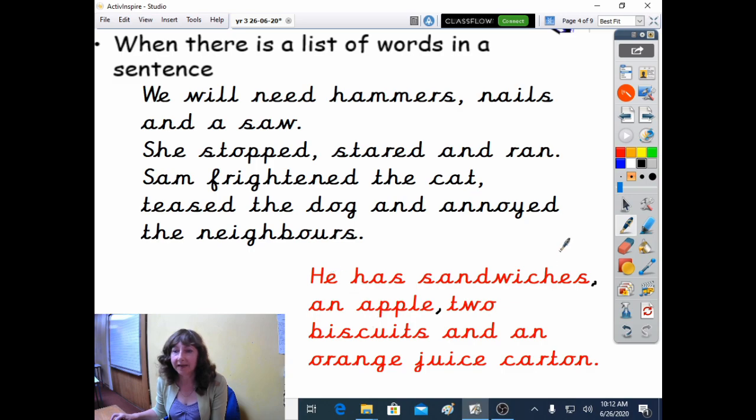So he has sandwiches, an apple, two biscuits, and an orange juice carton. This is the easiest way of using commas, and the way that you're going to practice later on.